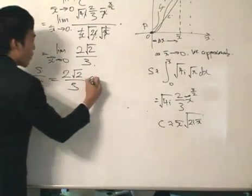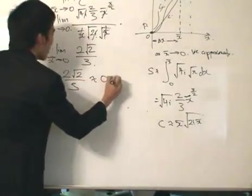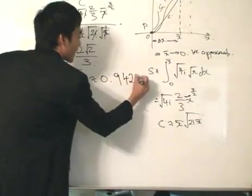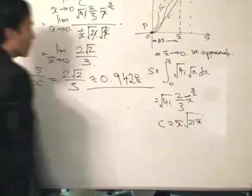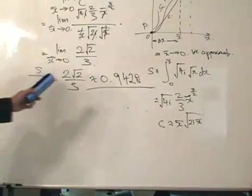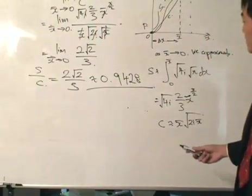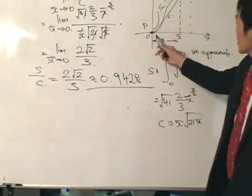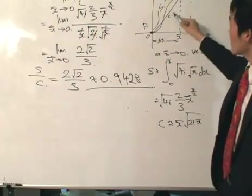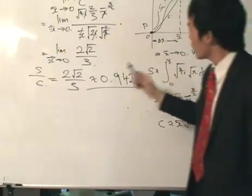S over c, which is approximately equals to 0.9428, and that is the magical number. So analyzing what we have here, as x dash tends towards 0, so as q goes closer to p, what do we find out? We find out that s